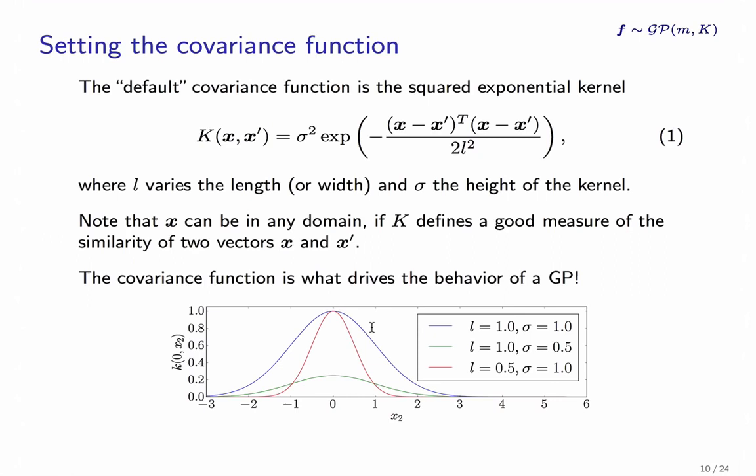It has two hyperparameters, the length scale L and an output variance sigma, where the length scale defines the influence of a function value in this direction. So with a lower length scale, only points that are very close are going to be influenced by one data point. With a rather large length scale, the influence spreads a bit wider.